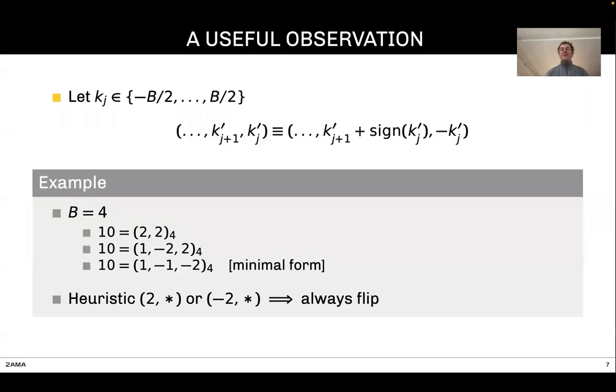Here is a very useful observation. Assume you are given such decompositions in radix B. What you can do is flip one digit. For example, I can flip that one—just take the opposite value. For that, we just have to propagate the sign of that digit to the next digit.